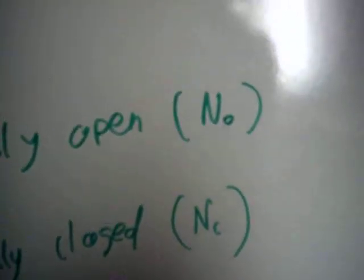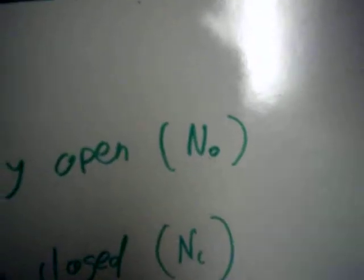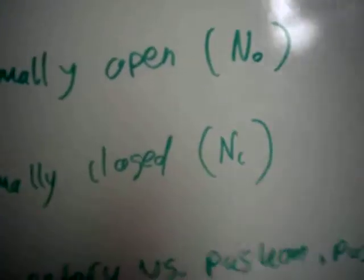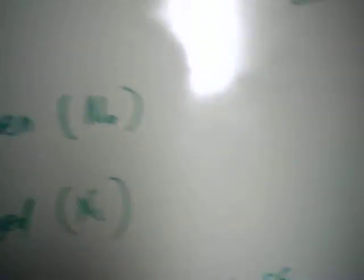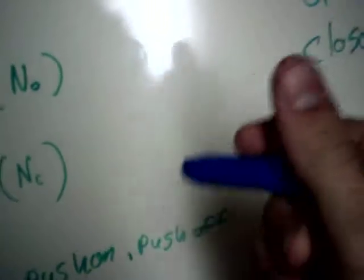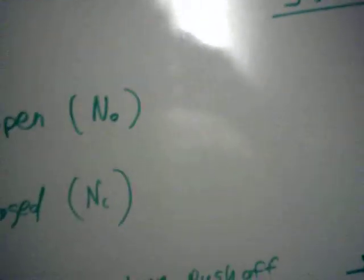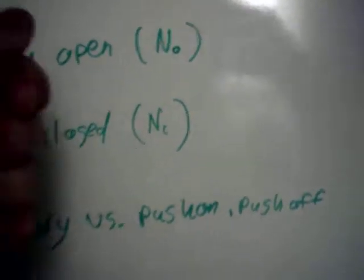A normally open switch is a switch that has a spring return, and it will go to open, and a normally closed, it will normally return to closed. This would not apply for like an on-off switch, or like a slide switch or something, because those are indicative of, well, you choose.